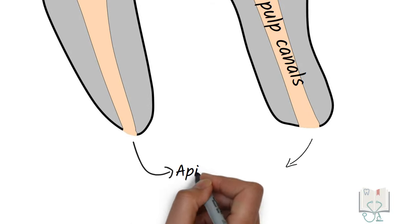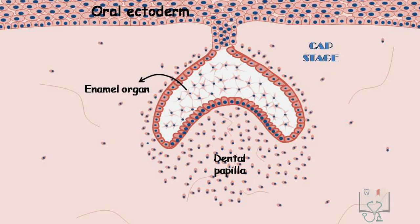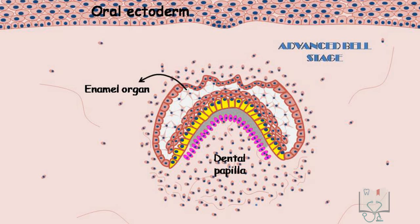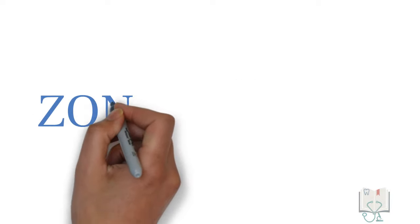Dental pulp develops from the dental papilla during the stages of tooth development. In the enamel organ, once the inner enamel epithelial cells fully differentiate into ameloblasts, they send signals to the cells of the dental papilla to differentiate into odontoblasts. As odontoblasts deposit dentine and move backwards, the part of the dental papilla which remains unmineralized forms the dental pulp.